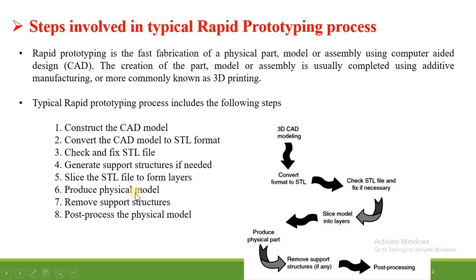Next, produce the physical model — the physical model is created using a 3D printer or any additive manufacturing machinery. Then remove the support structure; the support structure provided during manufacturing needs to be removed in the post-curing process. The last step is post-processing of the physical model, which consists of removal of support structure, cleaning or washing — all these activities come under post-processing.